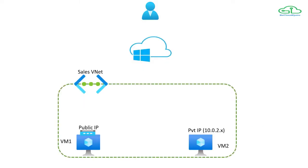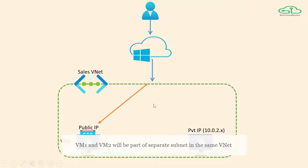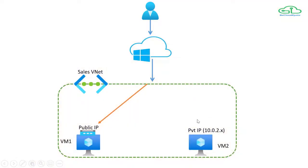Now let's see what we'll do in today's demonstration. We will create a single VNet containing two virtual machines - VM1 and VM2. VM1 will have a public IP because we'll be connecting to it from outside the network. VM2 will not have a public IP, so it cannot be reached from the internet. However, since both VM1 and VM2 are part of the same virtual network, by default they will be able to communicate with each other using private IP addresses.